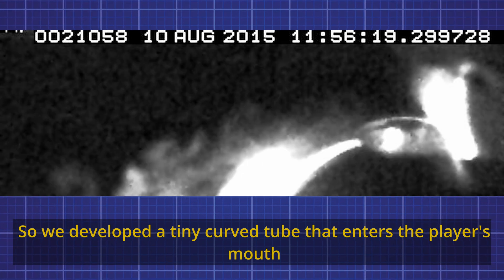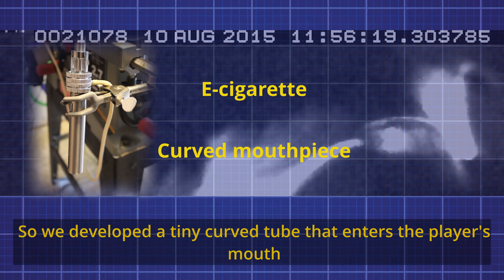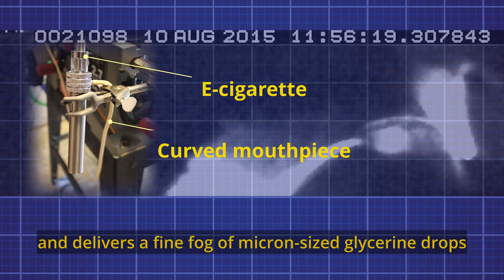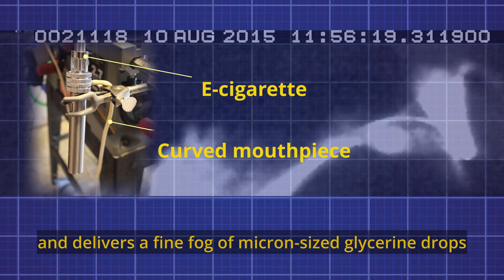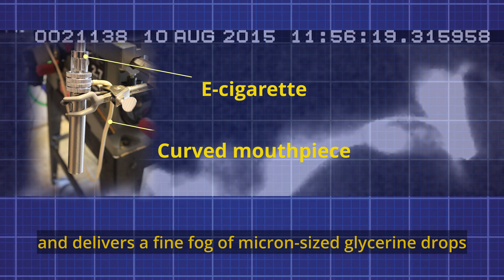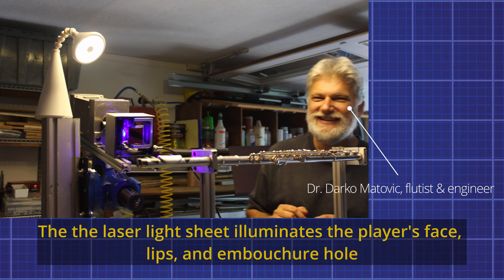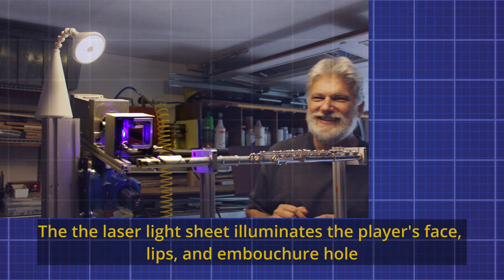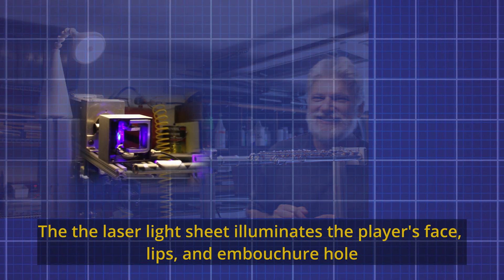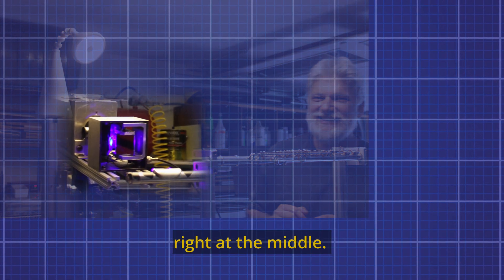We developed a tiny curved tube that enters the player's mouth at the lip edge and delivers a fine fog of micron-sized glycerin drops, but only when the player blows the air out. Then the laser light sheet illuminates the player's face, lips, and the embouchure hole right at the middle.